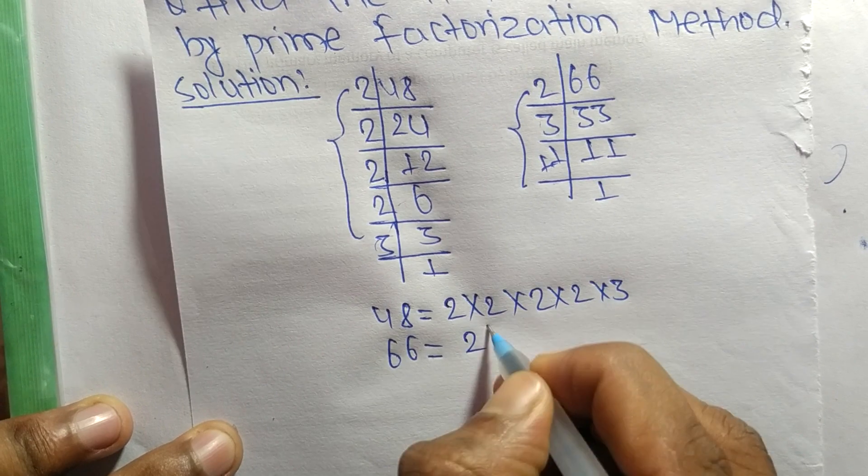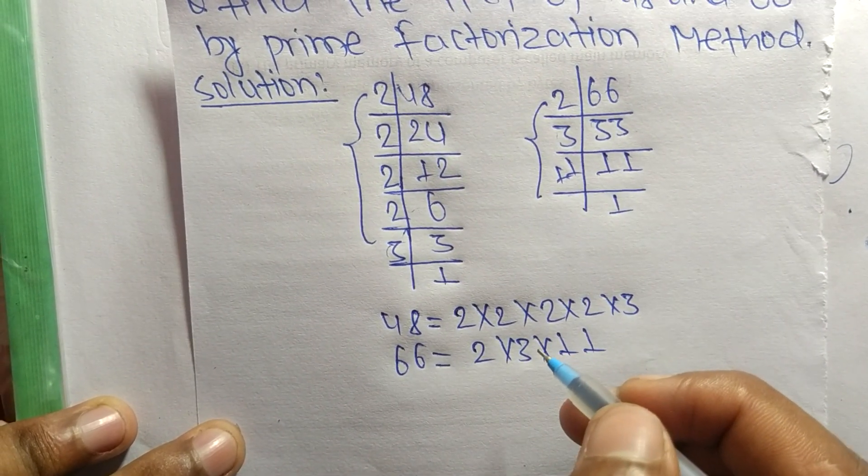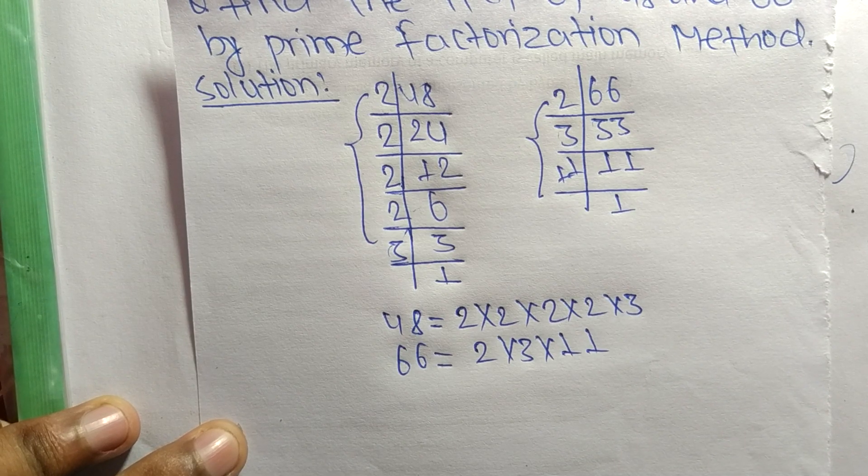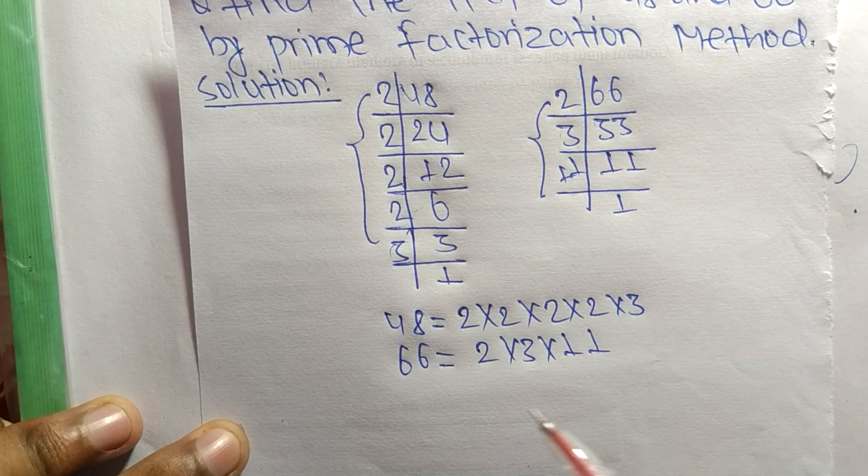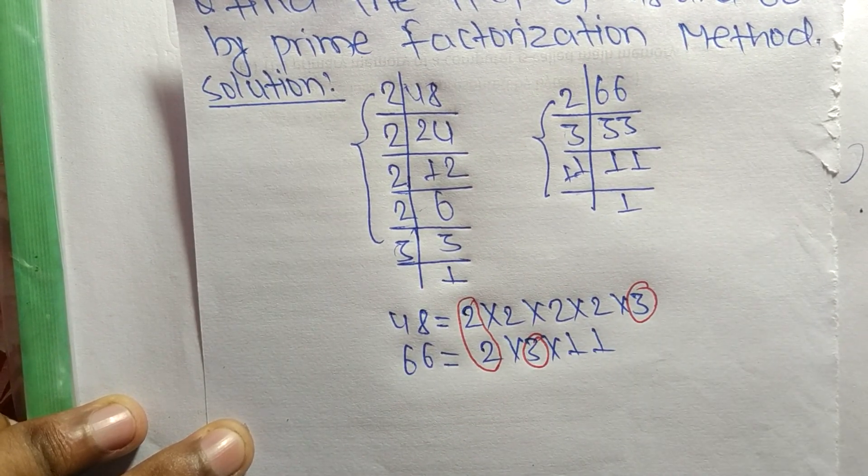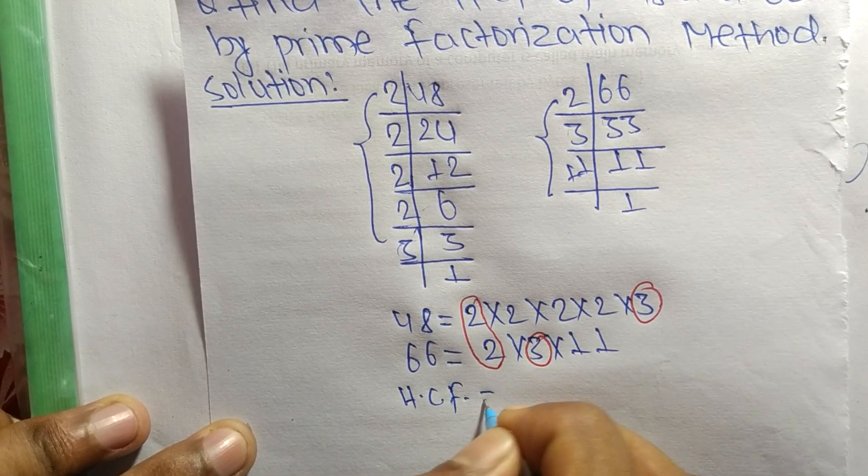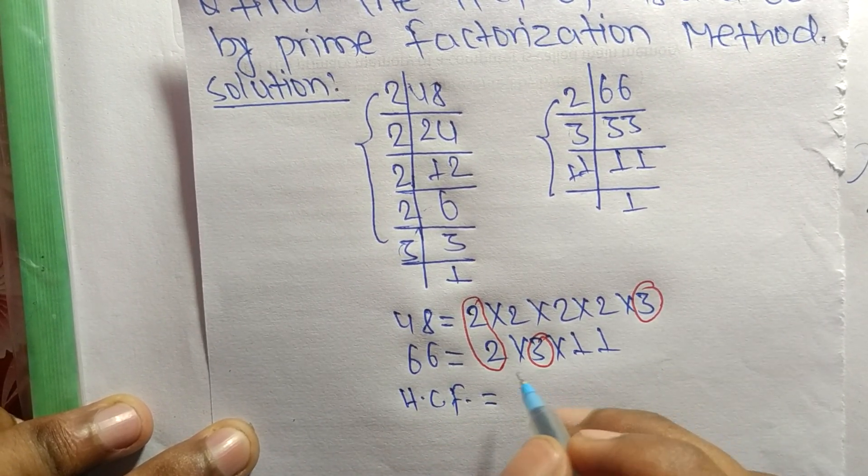So now we have to find out the common factors in these prime factors. Common here is 2 and second common is 3. So its HCF equals the product of common factors which are 2 and 3.